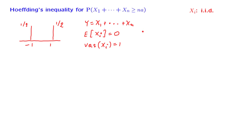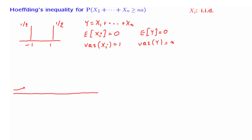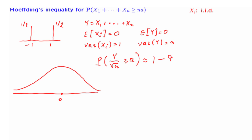For this reason, the random variable Y has a mean of 0 and a variance equal to n. By the central limit theorem, Y has an approximately normal distribution, centered at 0. The random variable Y over square root of n is a standardized random variable, so it's approximately normal. The probability that this number is larger than or equal to some a is approximately 1 minus the cumulative of the standard normal, where phi denotes the standard normal CDF.